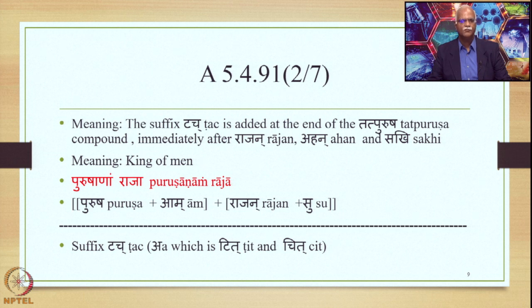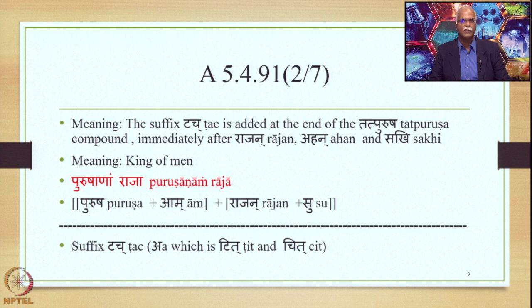The meaning of the Sutra is: the suffix Touch is added at the end of the Tatpurusha compound immediately after Rajan, Ahan and Sakhi. So Rajan, Ahan and Sakhi form the Uttarapada of the Tatpurusha Samasa. No Purwapada condition is mentioned in this particular Sutra, keeping it an open-ended bag — a very important clue for the productivity of the compound and also the forms with the Samasanta Pratyaya.